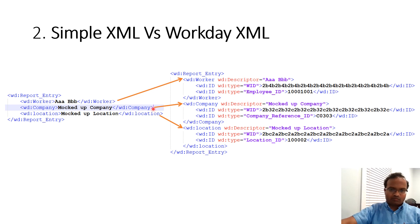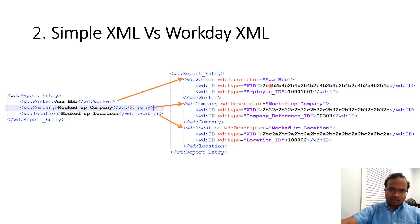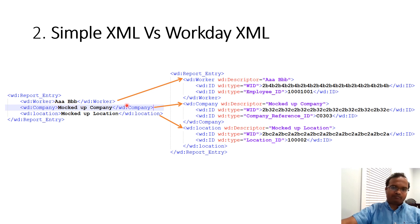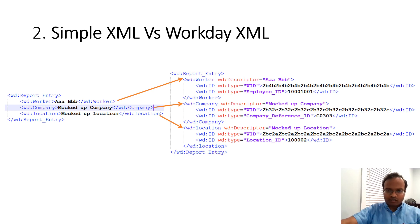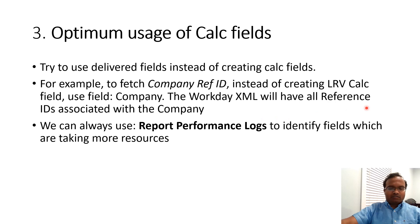Simple XML has straightforward data whereas Workday XML has much more data than what you see at the report level. For example, you already have worker name, Workday ID, and employee information available — you don't have to exclusively add extra fields for those. Similarly for company and location fields.